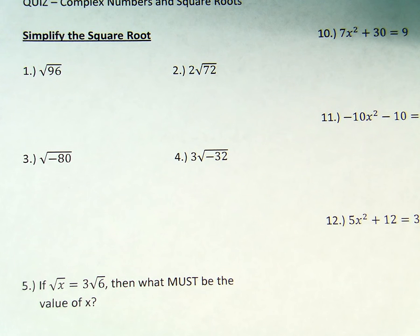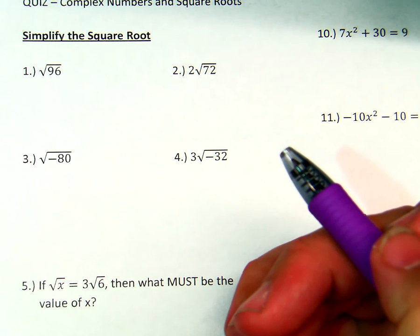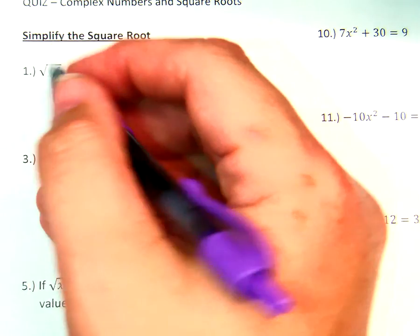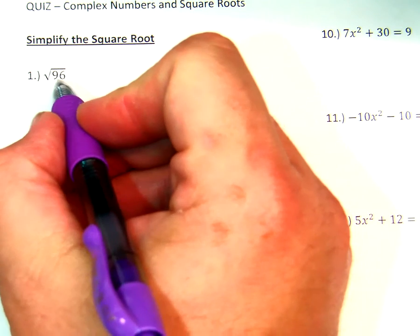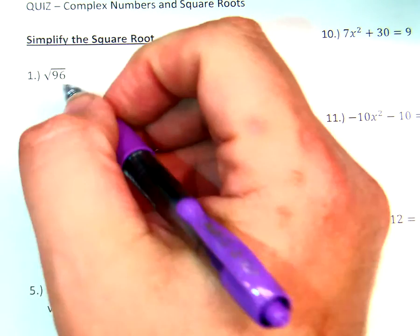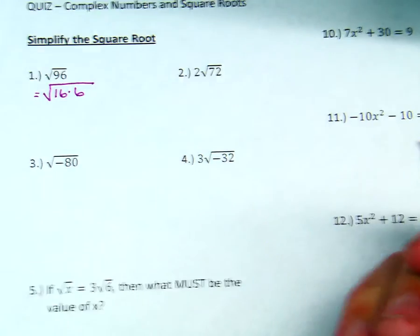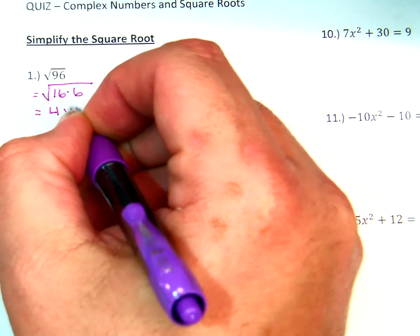Alright, now simplifying square roots. You've been doing this since 7th grade. You did that last week. Now for number 96: 16 times 6, which gives you 4 times the square root of 6.